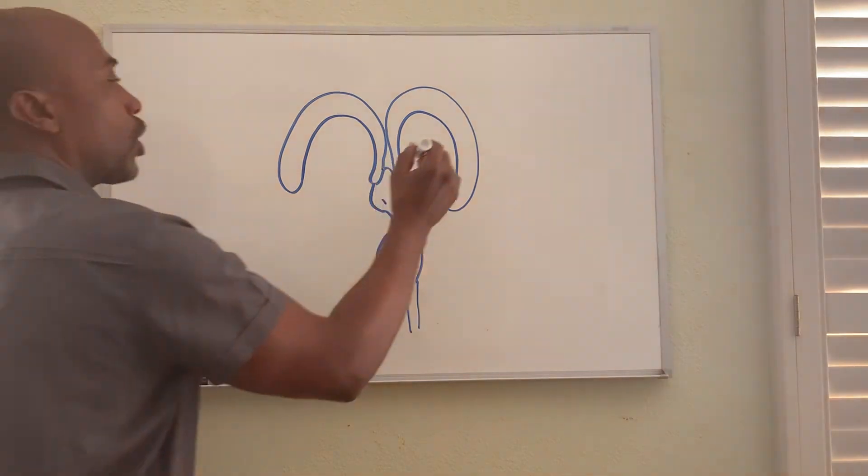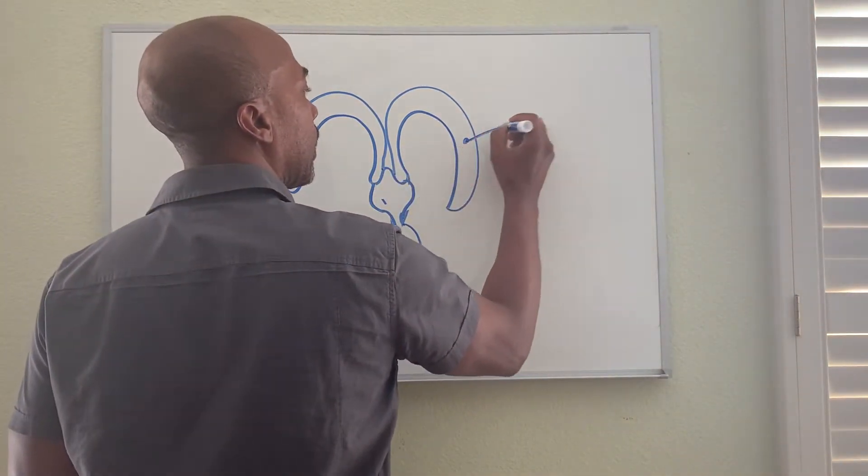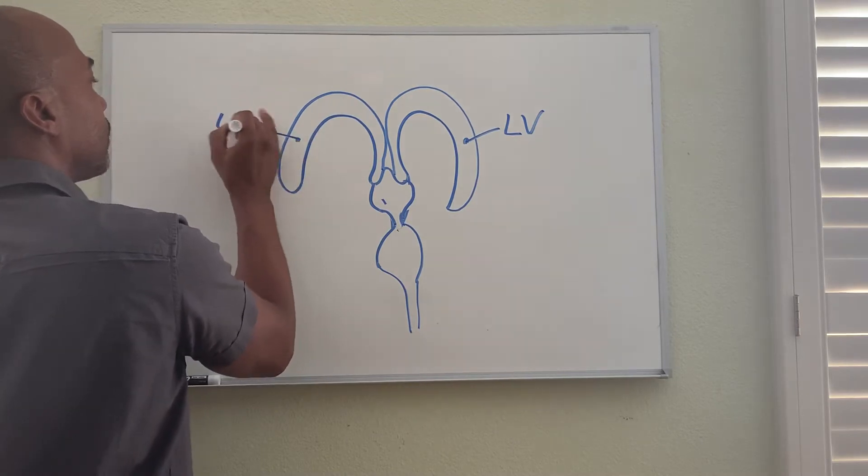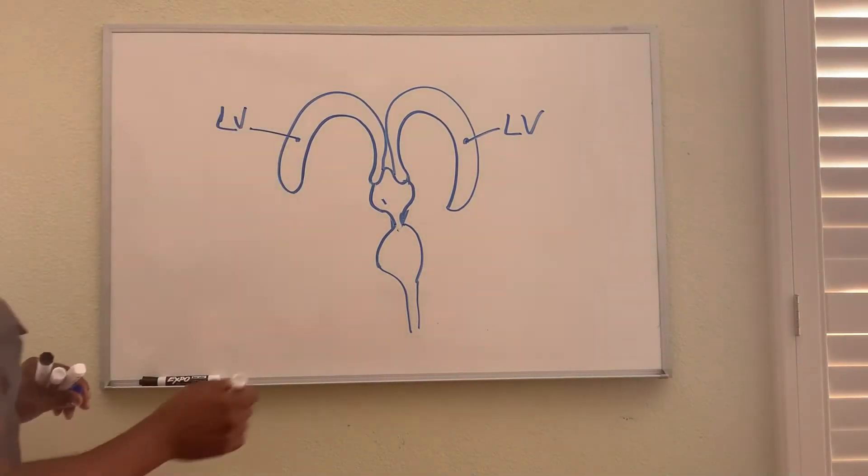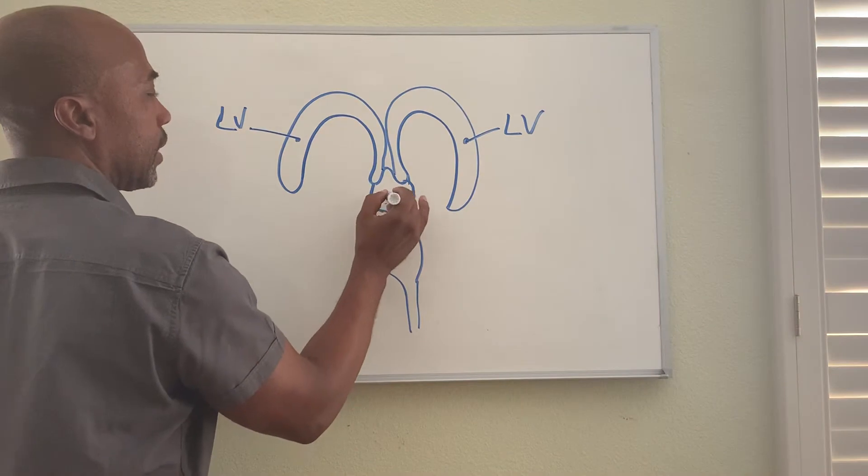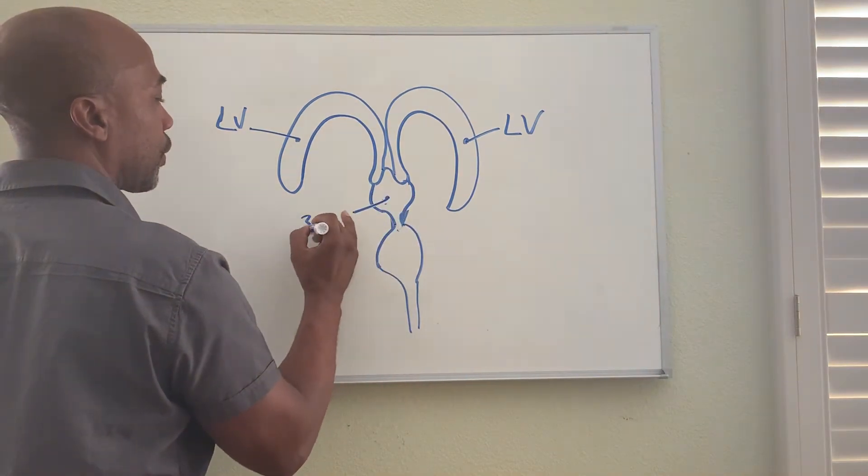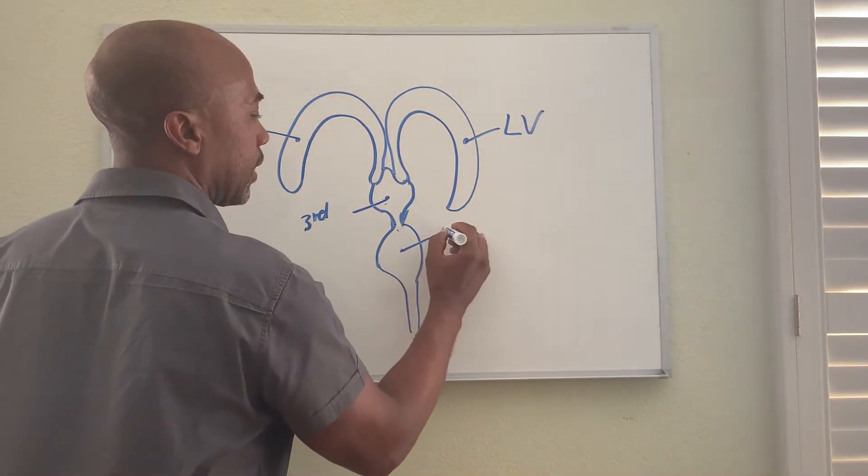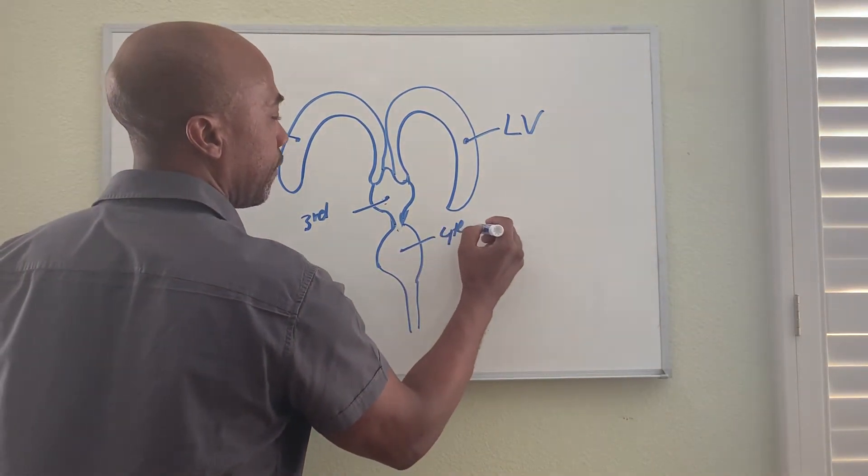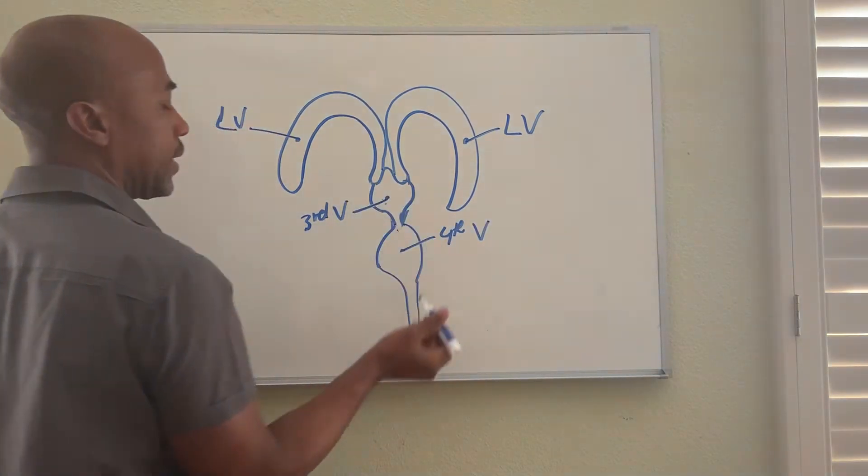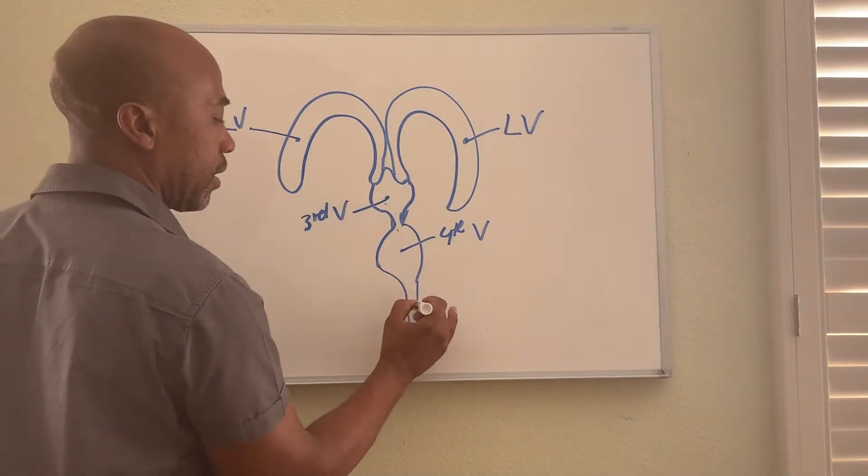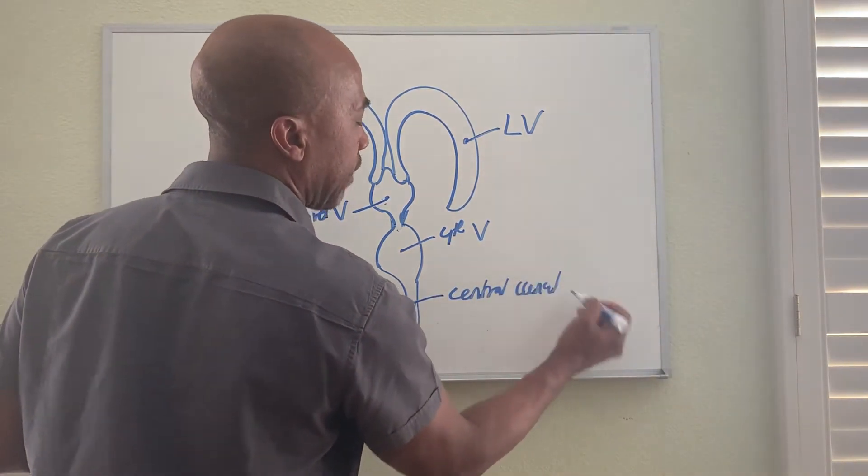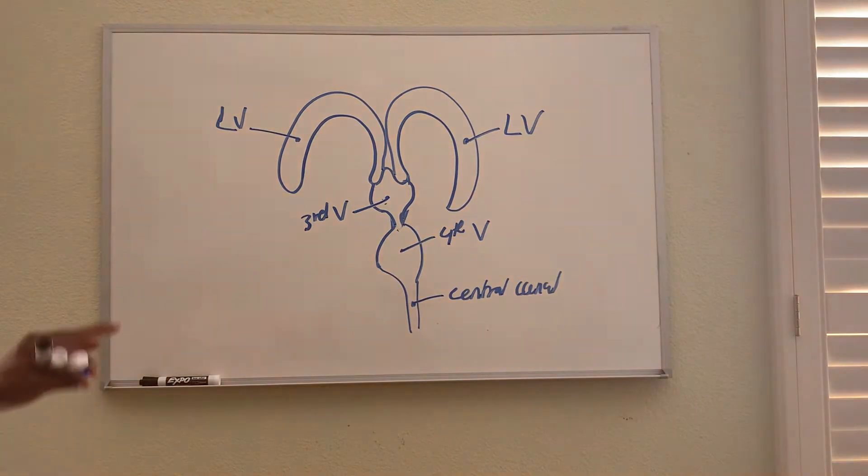So we call these the lateral ventricles, two of them. This one is your third ventricle, this is the fourth ventricle, and then this right here is called the central canal. Those are the cavities in the brain: two lateral ventricles.